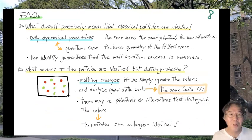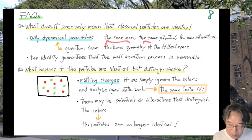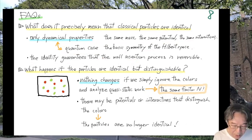Probably you have many questions. Here are two of them. First: what does it precisely mean that classical particles are identical? In this case, identity is in a purely dynamical sense — what you need is the same mass, the same potential, the same interaction, and so on. This is very different from the quantum case, where identity means a basic symmetry of the Hilbert space. This dynamical identity is used in many places, but most crucially in the wall insertion process, where it guarantees that the wall insertion is reversible. Please look at my note for details.